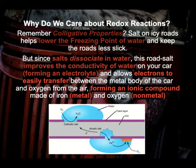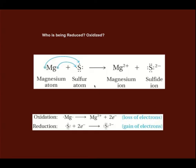Let's look at some simple examples. Metals like magnesium are on the left side of the periodic table and like to lose electrons. Non-metals like sulfur, on the right side, like to gain electrons. So magnesium will lose its two valence electrons, and sulfur will gain them. When magnesium loses electrons it becomes a positive cation; when sulfur gains, it becomes a negative anion.